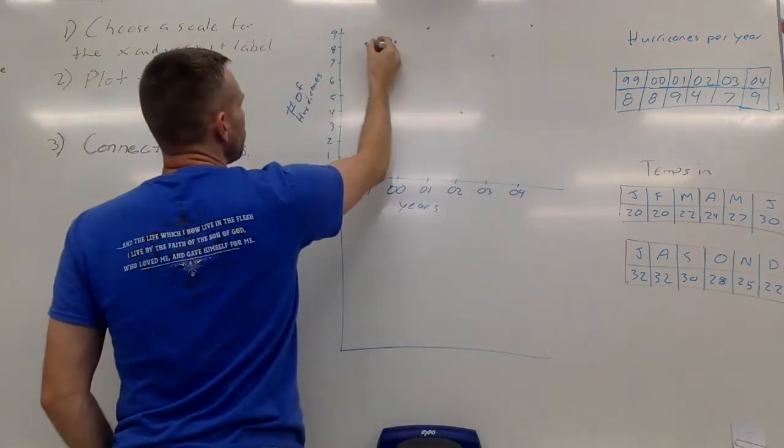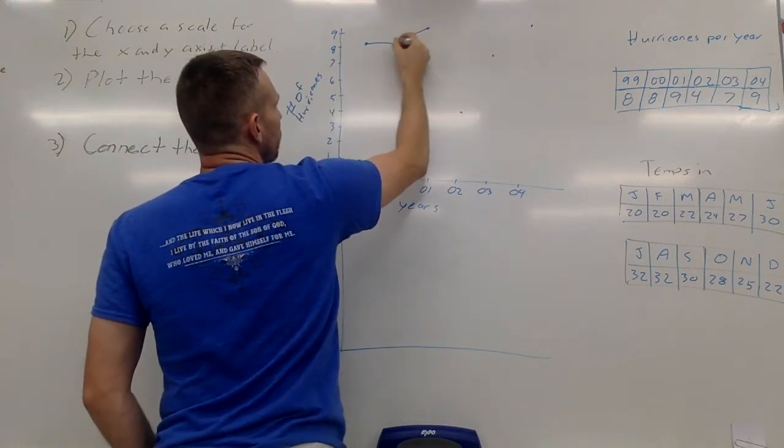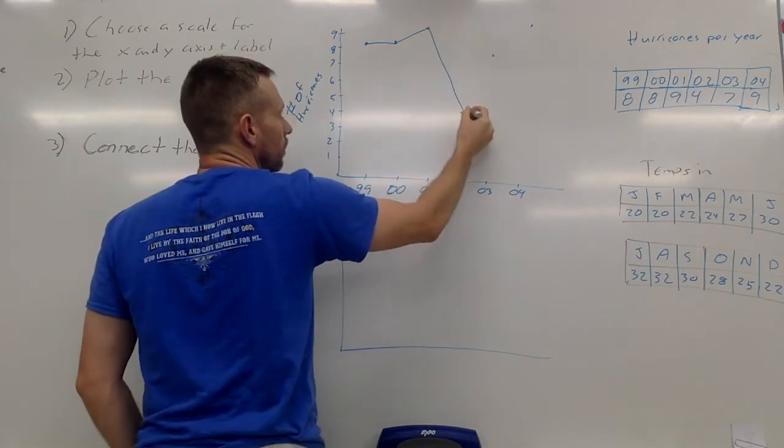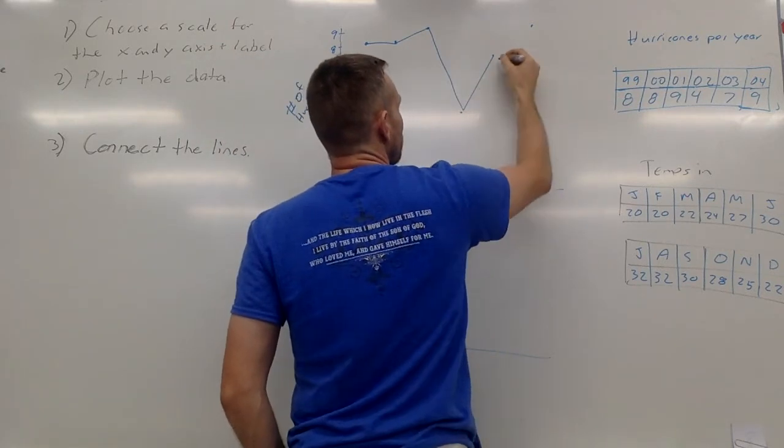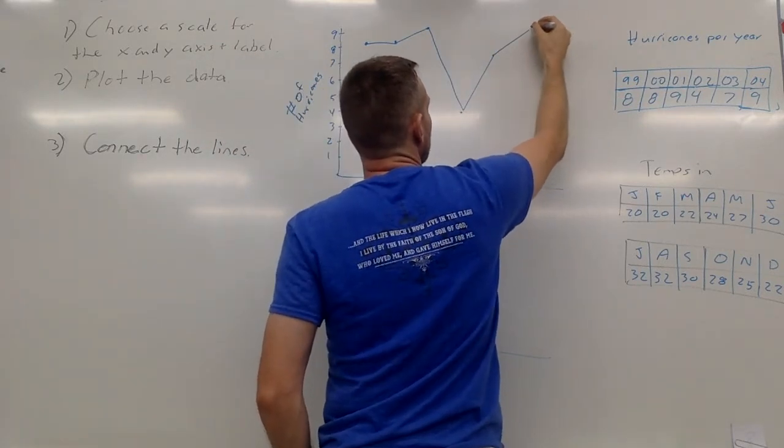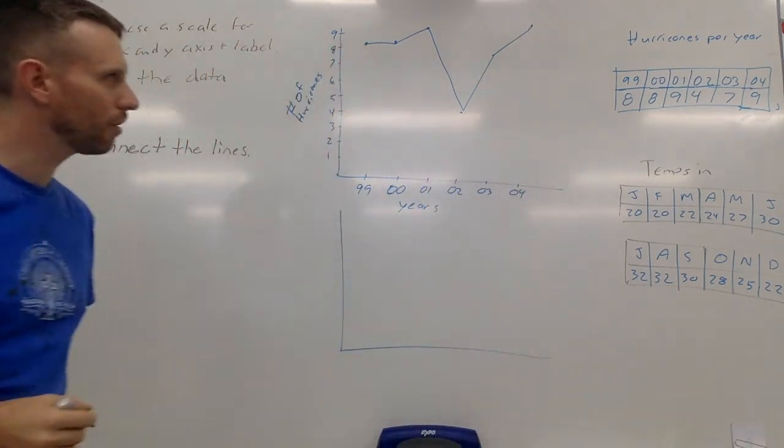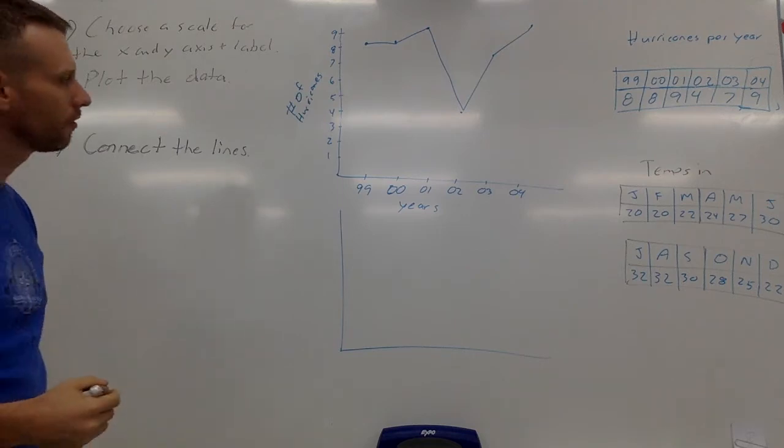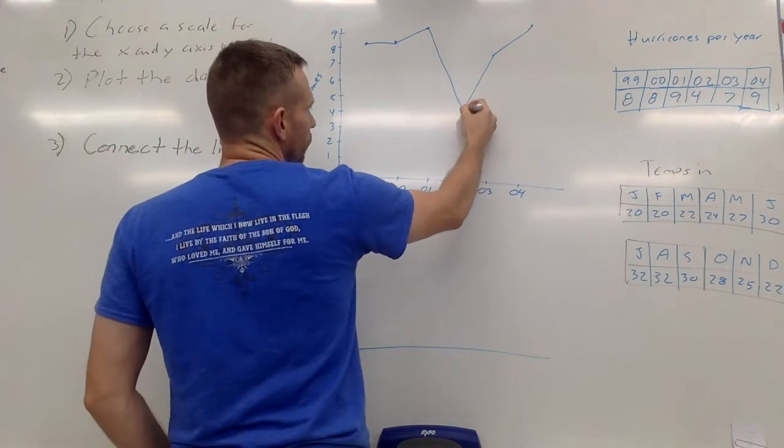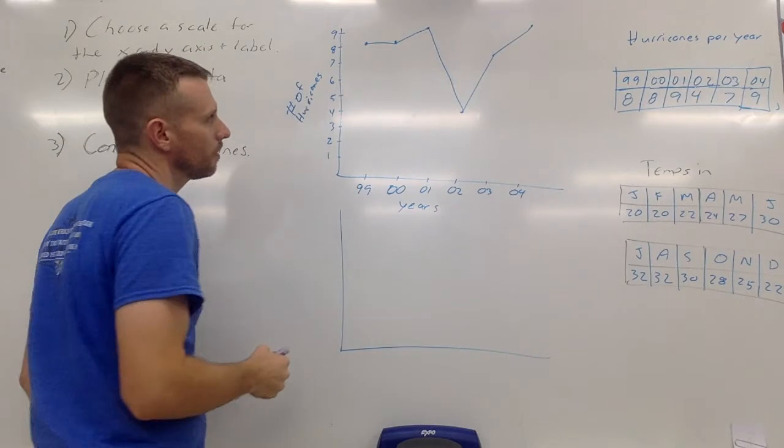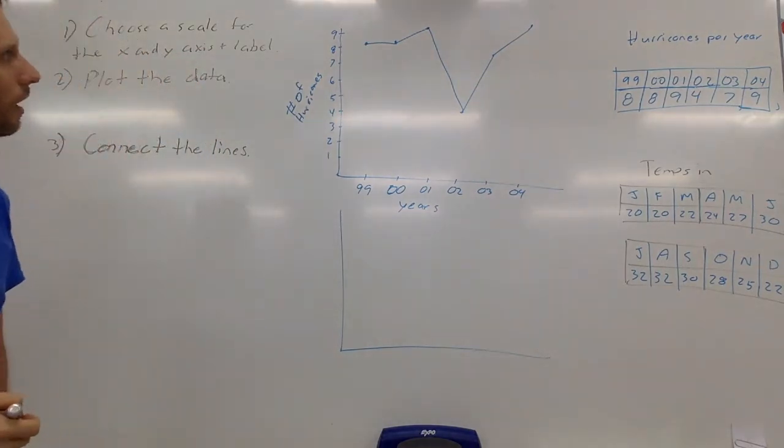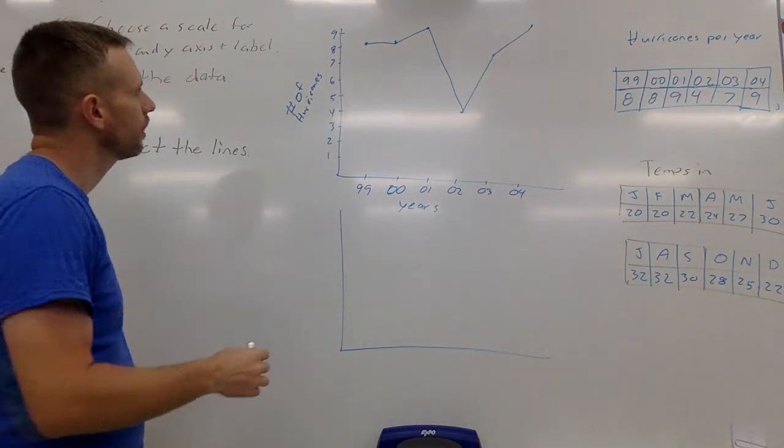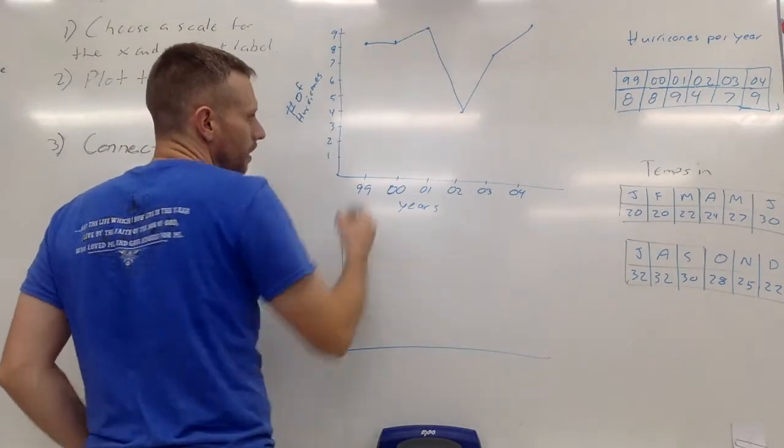And then last but not least I'm going to connect all my dots. Now we can see the trend in hurricanes from here to here. There was a very light year of hurricanes in 2002, but most of the hurricanes per year are between seven and nine.